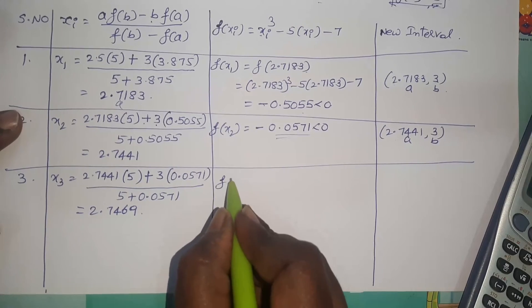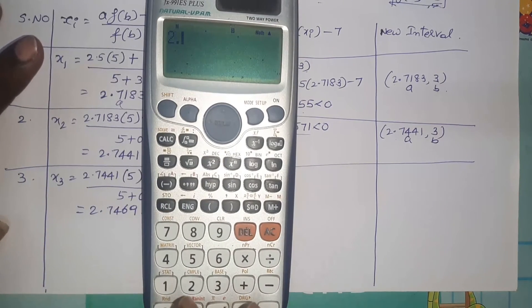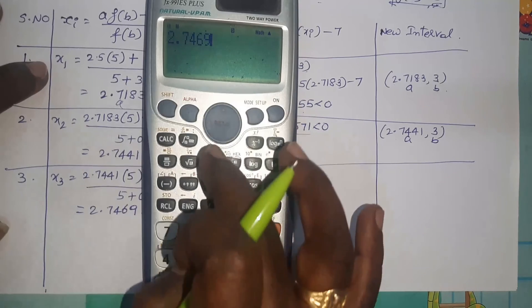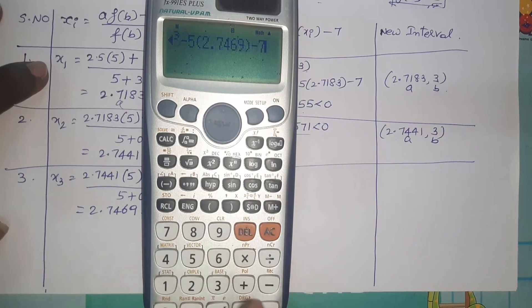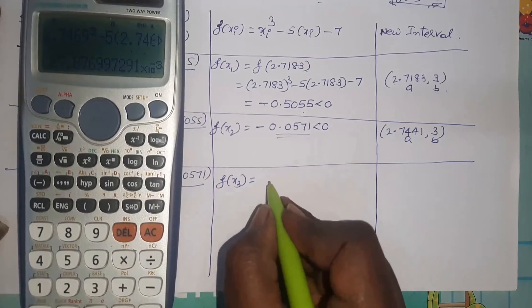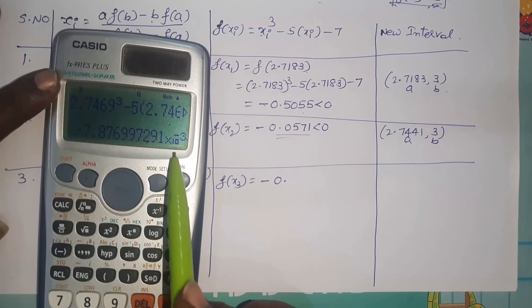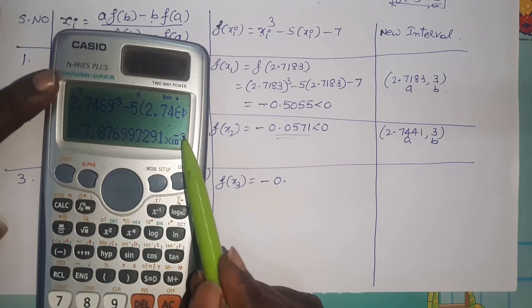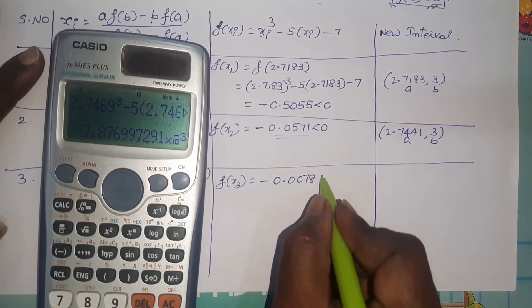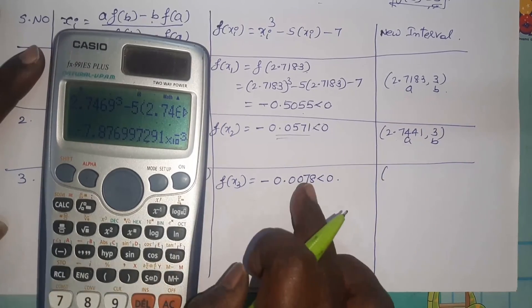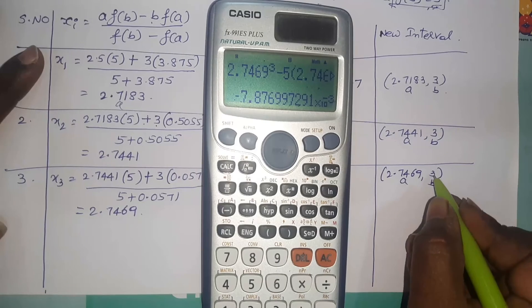Calculate f(x3) = 2.7469³ - 5×2.7469 - 7. I get a negative value. In scientific notation it is negative × 10⁻³, so in decimal form this is -0.0078, which is less than 0. Since it is negative, the new interval becomes [2.7469, 3], where a = 2.7469 and b = 3.